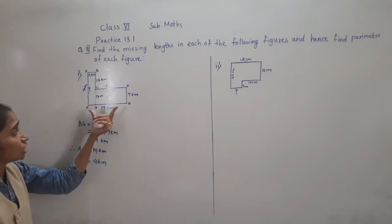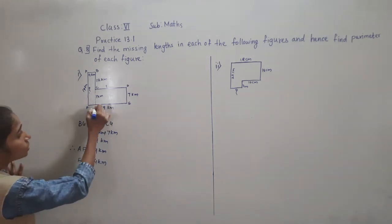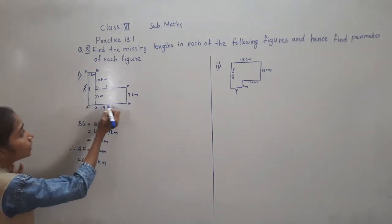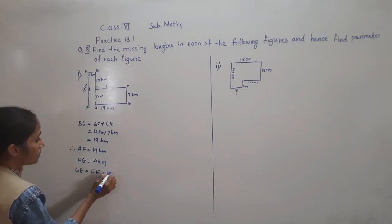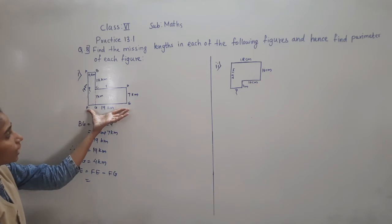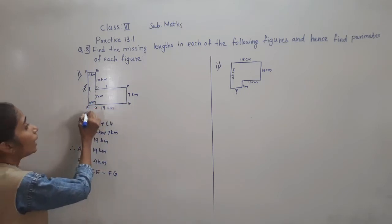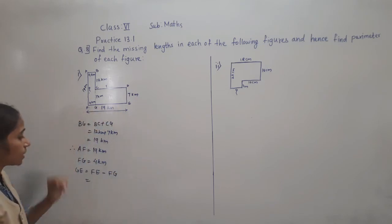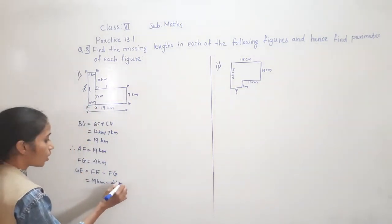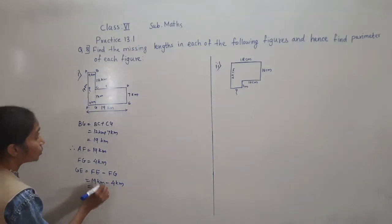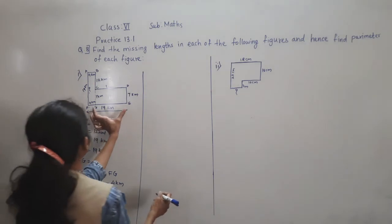Now to find CD, we first need GE. GE is equal to FE minus FG. FE is 19 km and FG is 4 km. So GE = 19 minus 4 = 15 km. GE = 15 km.